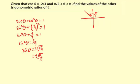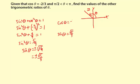Now it could be positive or negative. Looking at the graph, in quadrant two the sine value is positive, so we know that the sine of theta is going to be positive square root of five over three. We are already given that the cosine of theta is negative two-thirds, and these are the only two values we need to find the rest.